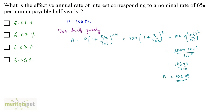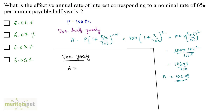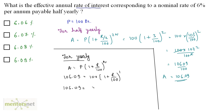That's the amount if the interest is paid half yearly at this rate. Now we want to calculate the rate of interest for this amount if the interest is paid yearly. For interest compounded yearly, the amount equals P into 1 plus r upon 100, raised to n. With n = 1 year, we have 106.09 equals 100 into 1 plus r upon 100, raised to 1. So 106.09 equals 100 plus r. Therefore r equals 106.09 minus 100, that's 6.09%. The rate is option D, 6.09%.